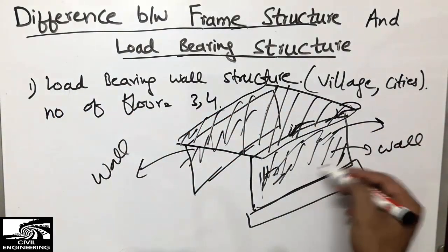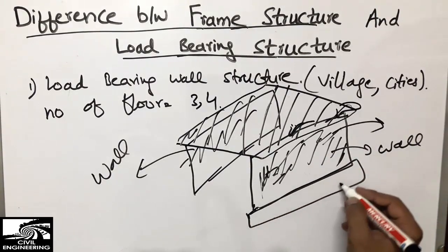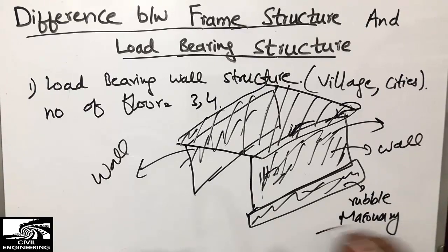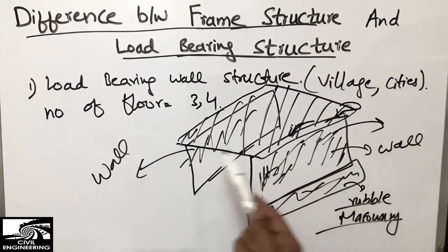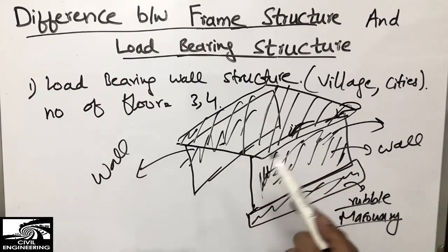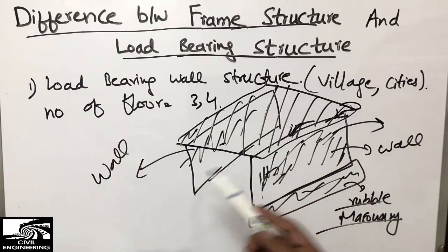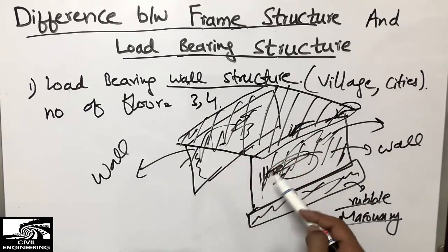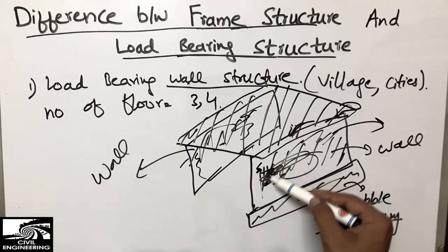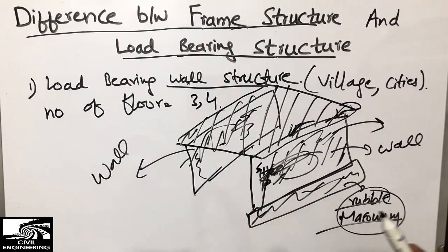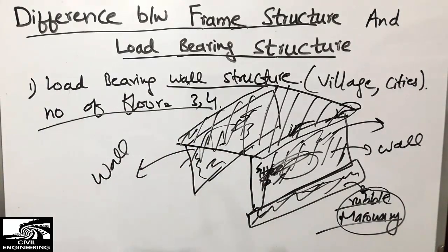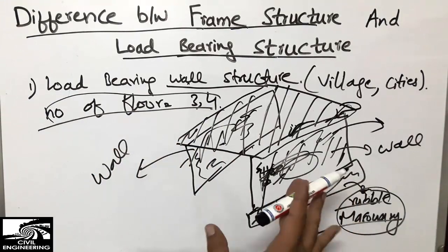The load goes to the foundation, which is mainly rubble masonry — the kind of masonry we provide in villages for this type of structure. We mostly see three or four floors in this type of structure because they are without columns and without a beam-and-column system. The wall supports the whole load; the slab load is carried by the wall, which transfers it to the rubble masonry foundation below.